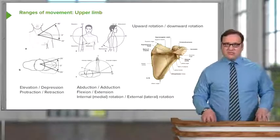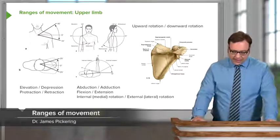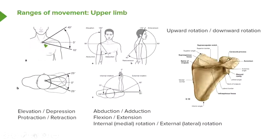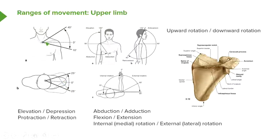And to finish, I just want to talk about the various movements that are allowed to occur at the upper limb. Here we can see various movements occurring at the various joints. At the sternoclavicular joint, which allows a wide range of movements, we have its ability to elevate and depress the upper limb. We also have the movements known as protraction and retraction, where the upper limb is allowed to move forwards and then backwards. These movements occur at the sternoclavicular joint.